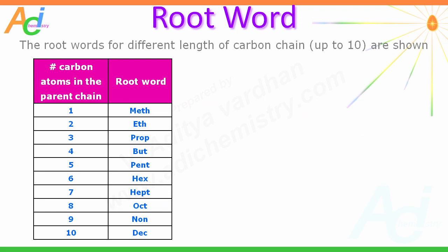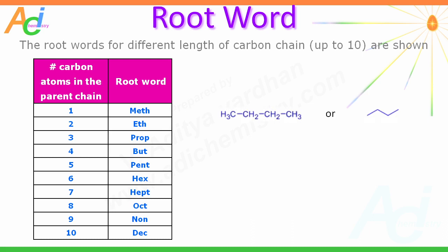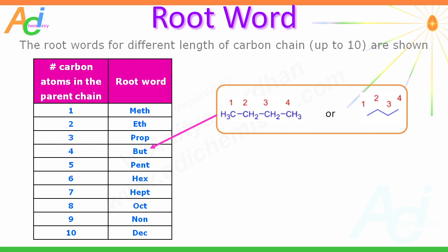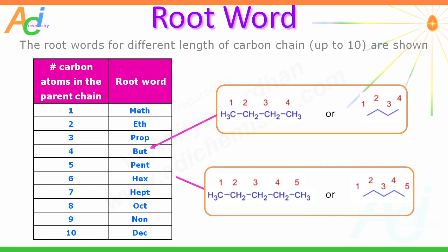First, about the root word: it indicates the number of carbon atoms in the parent chain. Different root words are used depending on the number of carbon atoms. For example, if there is only one carbon atom, the root word is 'meth'; for two carbon atoms, 'eth'; for three, 'prop'; for four, 'but'; and so on — root words are given up to ten carbon atoms. For example, a molecule with four carbon atoms has root word 'but', and a molecule with five carbon atoms in the parent chain has root word 'pent'.